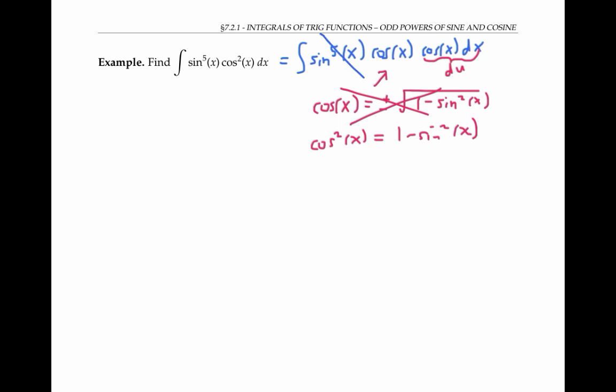So instead of trying to save out a copy of cosine x, let's save out a copy of sine x instead. So we'll rewrite our integral as the integral of sine to the fourth of x times a sine of x, and we'll keep the cosine squared x and the dx.